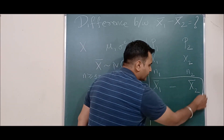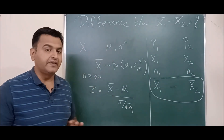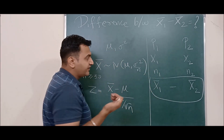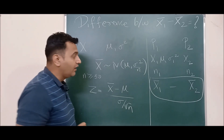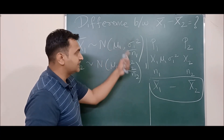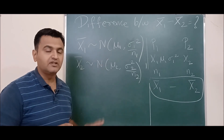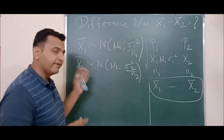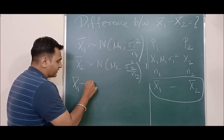The question is: what is the distribution of this random variable x̄₁ minus x̄₂? We take n₁ and n₂ to be at least 30 so we can apply the central limit theorem. So if x₁ has mean μ₁ and variance σ₁², then by CLT, x̄₁ follows normal distribution with mean μ₁ and variance σ₁²/n₁. Similarly, x̄₂ follows normal distribution with mean μ₂ and variance σ₂²/n₂. Moreover, the two samples are independent.